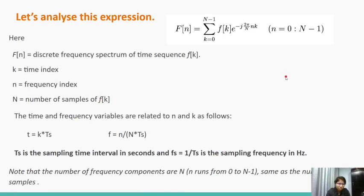Let's analyze this expression. Here, F[n] are the DFT components, i.e. the discrete frequency spectrum of time sequence f[k]. k is the time index, n is the frequency index, N are the number of samples of f[k].